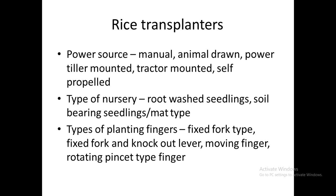If power operated, the rice transplanter can be tractor-driven or part of a power tiller. The type of nursery is important for determining the transplanting method. For root-washed seedlings, manual labor is used to uproot seedlings from the nursery, tied into small bundles and washed in water so that minimal soil sticks to the roots.